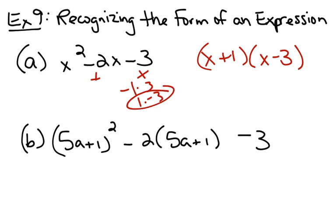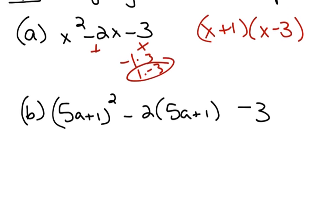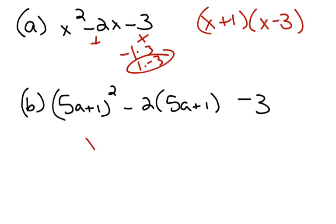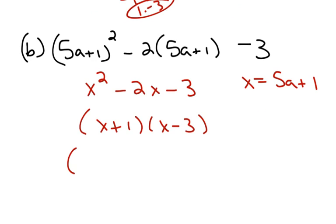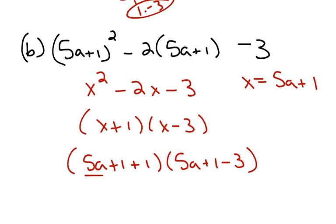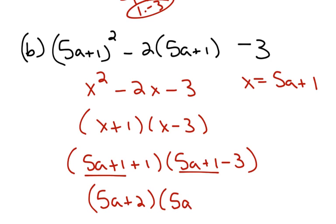In part b, they try to trick you. Notice that this is really just x squared minus 2x minus 3, where x is 5a plus 1. Wait — that's the previous problem! It's x plus 1, x minus 3, but in place of x you need to put 5a plus 1. Here's where I substituted back in for x, and then I can do a little simplifying. It becomes 5a plus 2, 5a minus 2. And that's your answer.